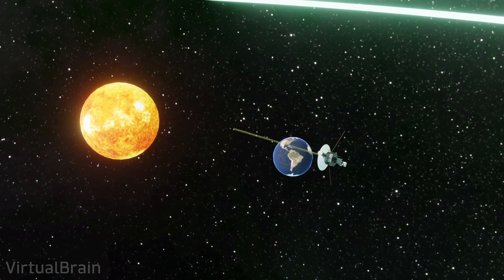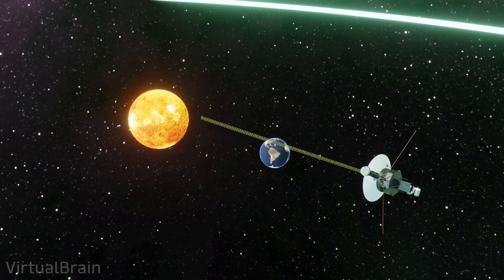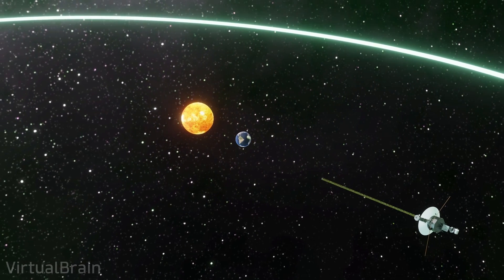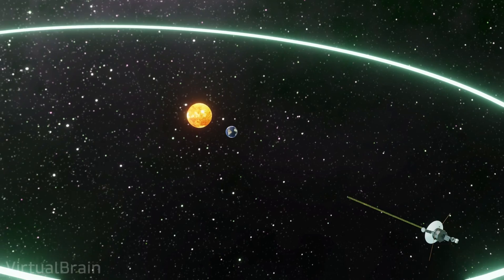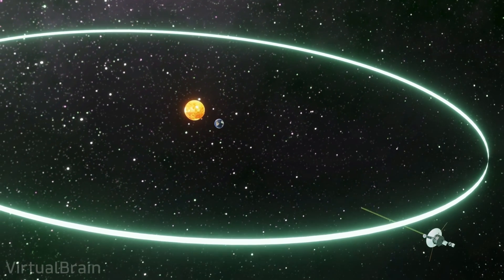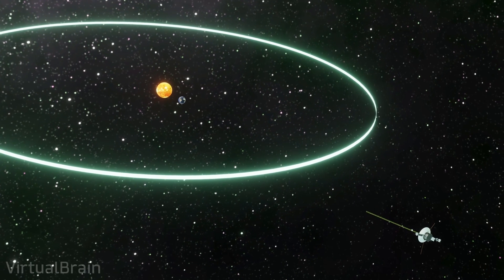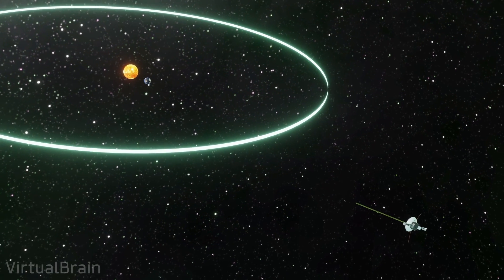The mission was initially projected to last five years, but to this day both probes continue to send data from beyond the heliopause, which they crossed in 2012, and which corresponds to the theoretical limit where the influence of the solar system ends and interstellar space begins.